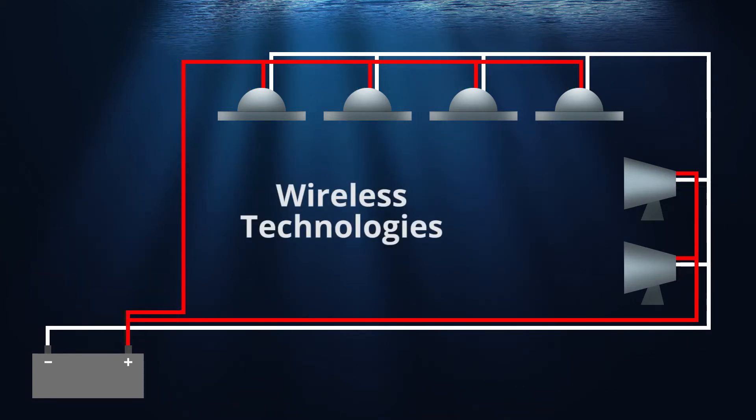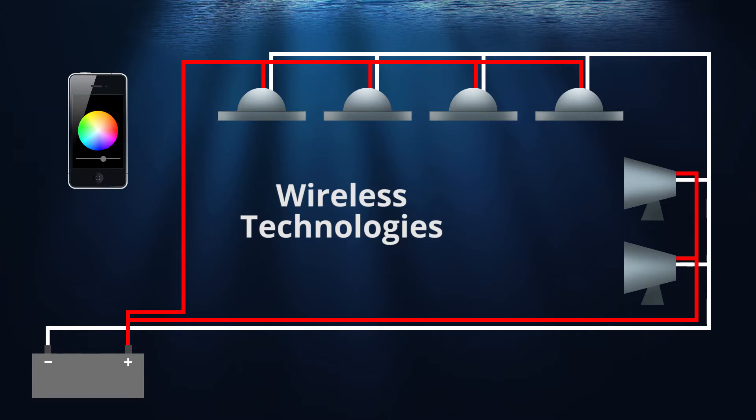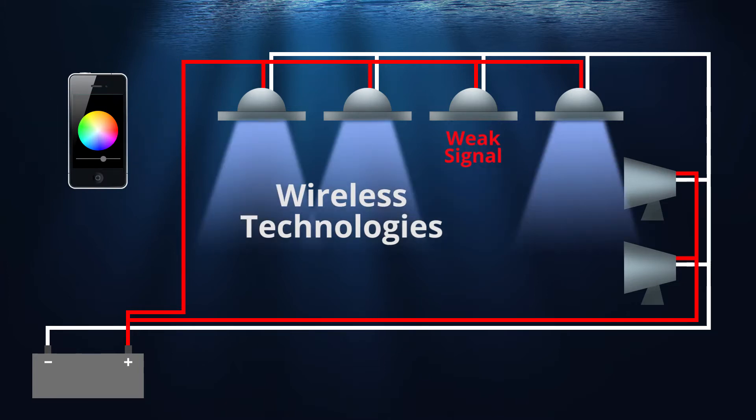Wireless technologies are everywhere in home automation, but all current wireless technologies are limited by things like metal heat sinks, solid cast housings, and hermetically sealed enclosures that are common to the most reliable and robust marine luminaires.